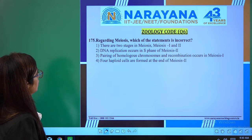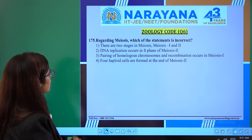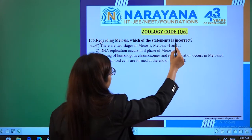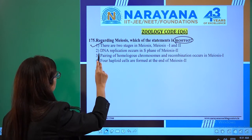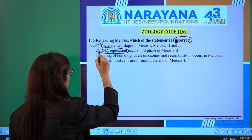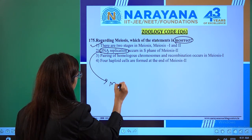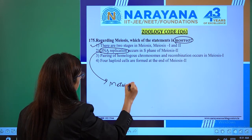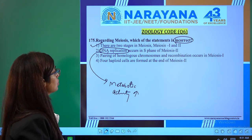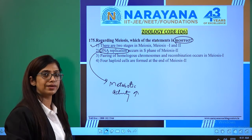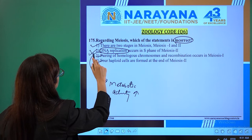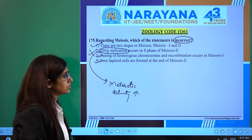In question 175, regarding meiosis, which statement is incorrect? There are two stages — meiosis 1 and meiosis 2 — the first statement is correct. The second statement says DNA replication occurs in S phase of meiosis 2 — this is incorrect, because replication does not occur in the S phase of meiosis 2; rather metabolic activity and internal mass increases. So in question 175, the second option is the wrong statement.